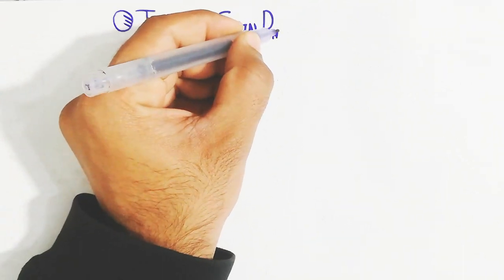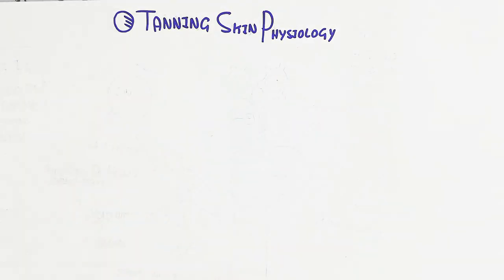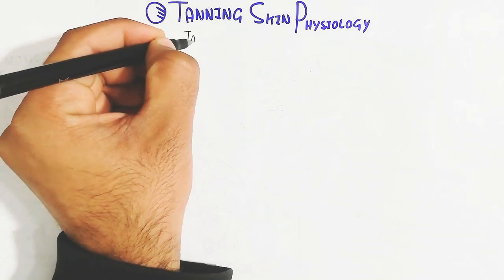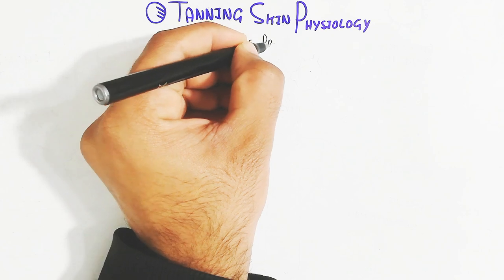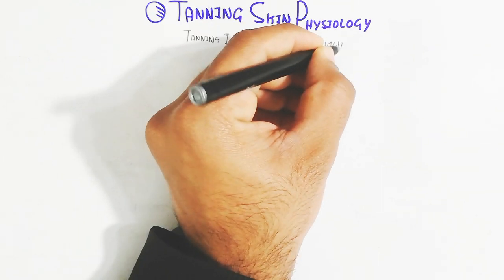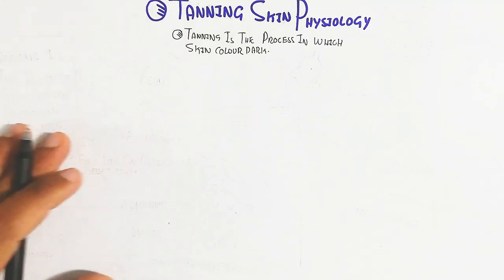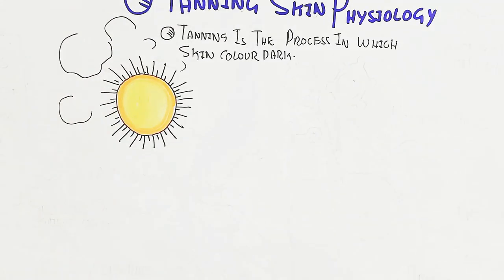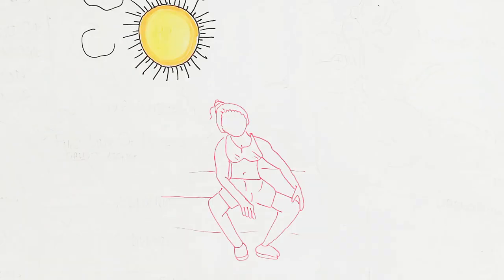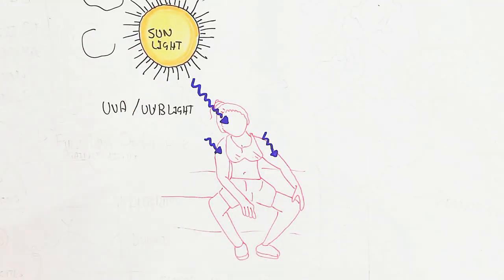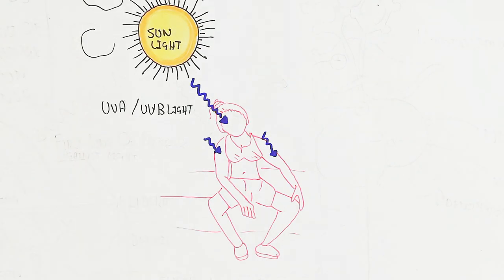In this video we will understand the tanning of the skin — the physiology of how tanning can occur. Tanning is a process in which skin color darkens for protection against UV light. Sunlight contains two types of UV radiation: UVA and UVB. UVA is not as harmful compared to UVB.